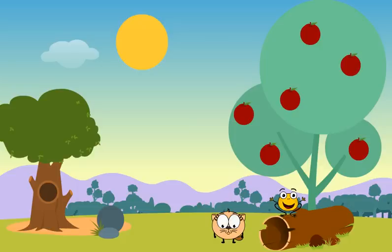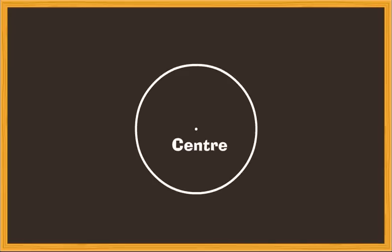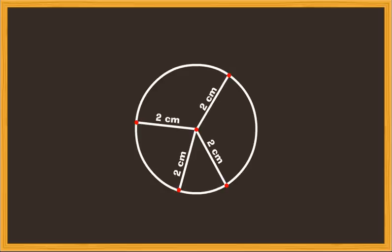First, there is the center of a circle. All points on a circle are at an equal distance from the center of the circle. In fact, a circle is defined as a closed figure, each of whose points are equidistant from a fixed point within it.